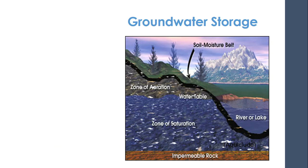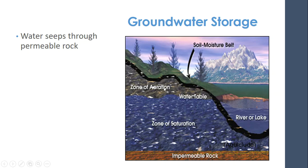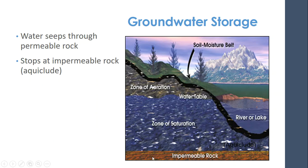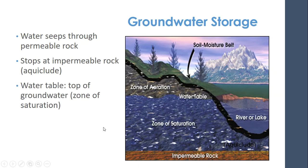When we think about groundwater storage, water seeps through permeable rock when it rains, going through this area called the zone of aeration. It stops at impermeable rock — what's called an aquiclude — which is that barrier where water can no longer go any deeper. The water table is the top of the groundwater.